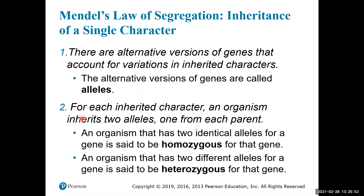The second hypothesis is that for each character, an organism inherits only two alleles — one from each parent. So if you have alleles for flower color, you get one allele from the male parent and one from the female parent, equaling two total alleles for that character. If the organism has two identical alleles, it is homozygous for that gene. If an organism has two different alleles, it is heterozygous — for example, one purple and one white allele.